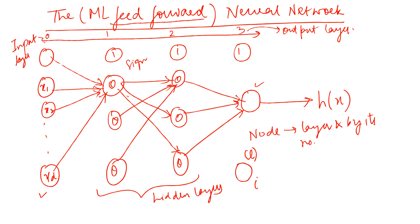This is a feedforward network because the output of one layer feeds into the next — the output of this layer feeds into this one and so on. We can also have layers feeding backwards, which is known as the recurrent neural network, obviously out of scope for this course. Or we can have connections skipping a layer — another variation. But what we're looking at now is the feedforward network, where the topological order in the graph is maintained.